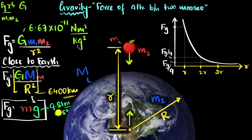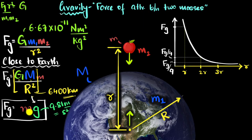So this is called acceleration due to gravity — this is the acceleration due to gravity of Earth. Different planets will have different accelerations due to gravity because they have different masses and different radii. So now we can answer our original question: how did we figure out the mass of the Earth? We already knew the value of small g because we calculated it experimentally — just by dropping something, measuring the height it dropped from and how long it took to fall, you can figure out this value.